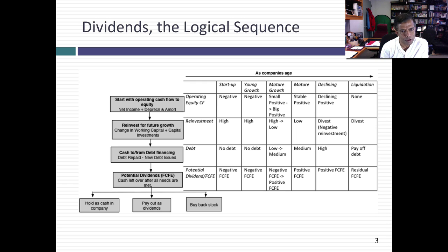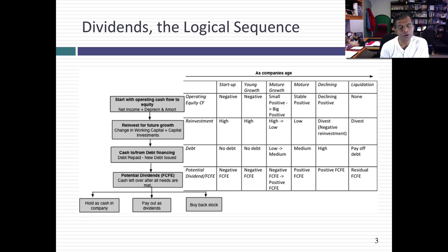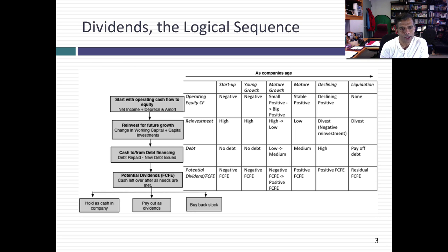Then if you're able to raise money, you'll bring in cash. But if you have to pay off debt, you've got to pay that cash out. You take care of your financing cash flows. So you start with the operating cash flow, then look at new investments you need to make, then look at your financing cash flows. What you're left with after you've met every conceivable need is your potential dividend. You could end up with a negative cash flow, in which case you can't or should not be paying dividends.